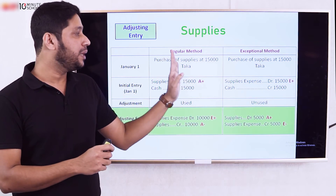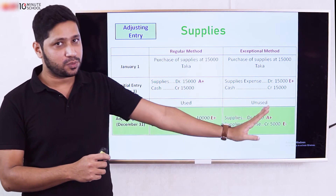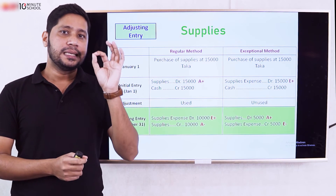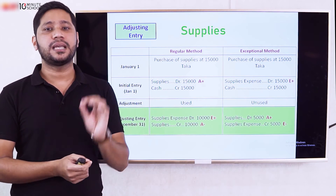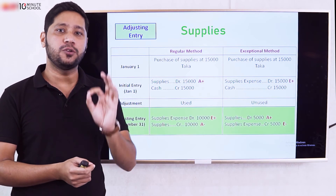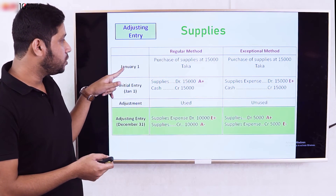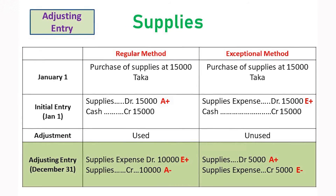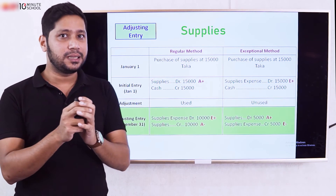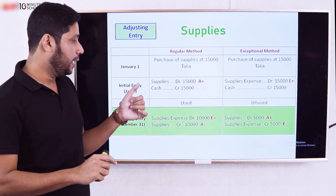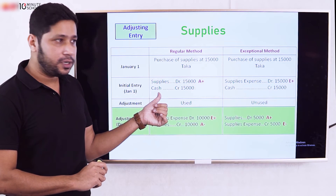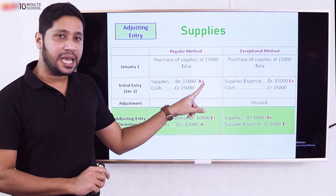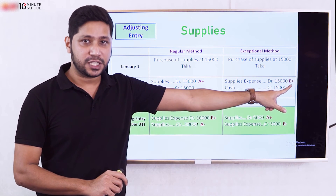It depends on what you record initially. If Supplies is recorded as an asset, then Supplies debit, Cash credit is the initial entry. If recorded as expense, then Supplies Expense debit, Cash credit. Supplies debit means assets; Supplies Expense debit means expense.